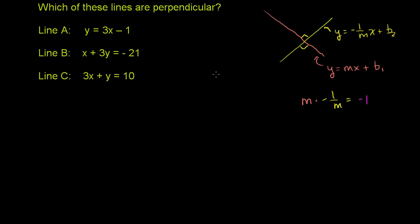So let's figure out the slopes of each of these lines and determine if any of them are the negative inverse of any of the others. Line a's slope is pretty easy to figure out — it's already in slope-intercept form. Its slope is 3. So line a has a slope of 3.